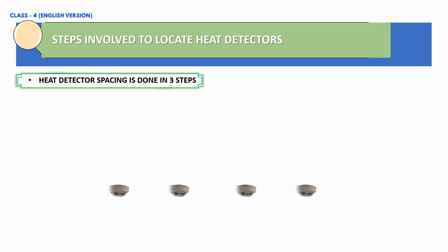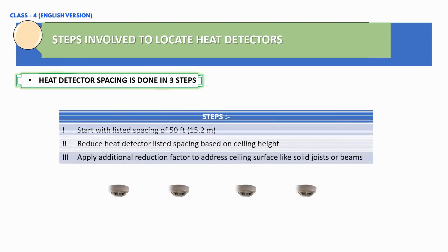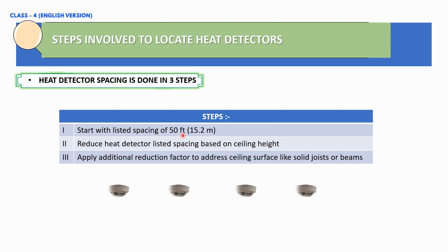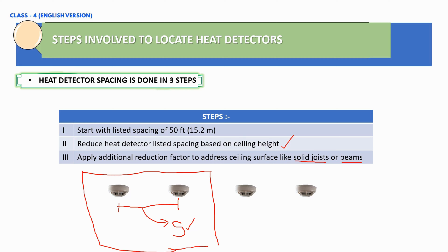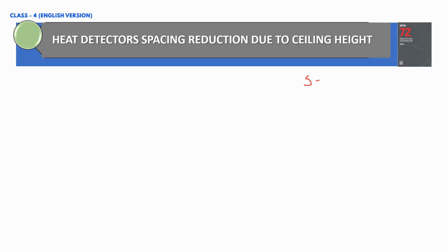It is straightforward to distribute heat detectors using three steps. Step one is to identify the listed spacing, which is about 50 feet as per NFPA 72 — denoted by S. However, this S will change based on ceiling height, and also if there are beams or solid joists in the room, the spacing between heat detectors will vary.